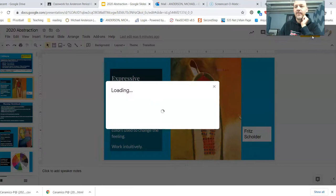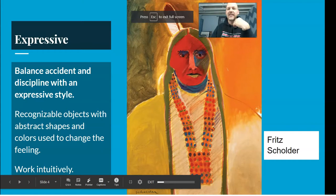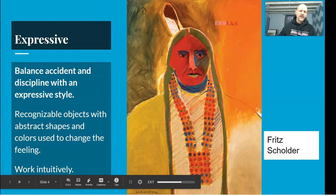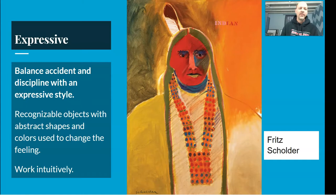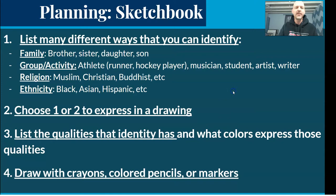One of the things he talks about is balancing accident and discipline. He says if something is completely accidental, what's the point? And if something is pure discipline, well then it's boring. So it's all about finding that balance between accident and discipline — working intuitively and thoughtfully at the same time.